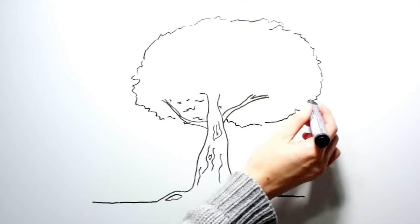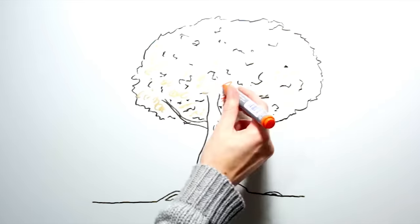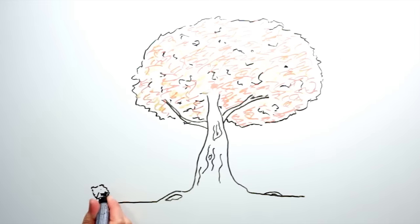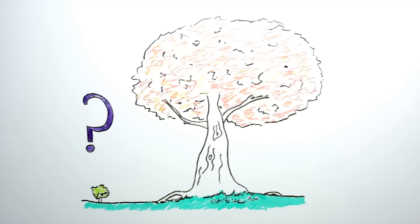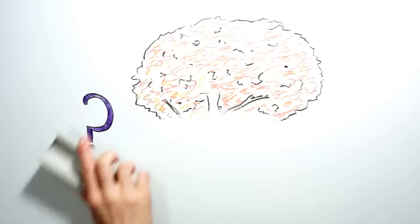As autumn approaches and the weather gets colder, most trees will lose their leaves. But before this happens, their leaves often change colour, giving a vibrant display of reds and yellows. But where do these colours come from, and why do trees produce them?